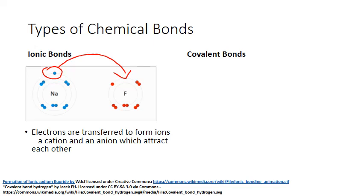That's exactly what we see happening between sodium and fluorine here. Sodium is in column one of the periodic table. It's a metal, and as we already know, metals when they form ions form cations. They lose electrons, and all the metals in column one lose one electron to form ions with a plus one charge. Fluorine is a non-metal in column 17 of the periodic table, and when non-metals form ions they gain electrons to form negatively charged ones. All the non-metals in column 17 gain one electron to form anions with a negative one charge.